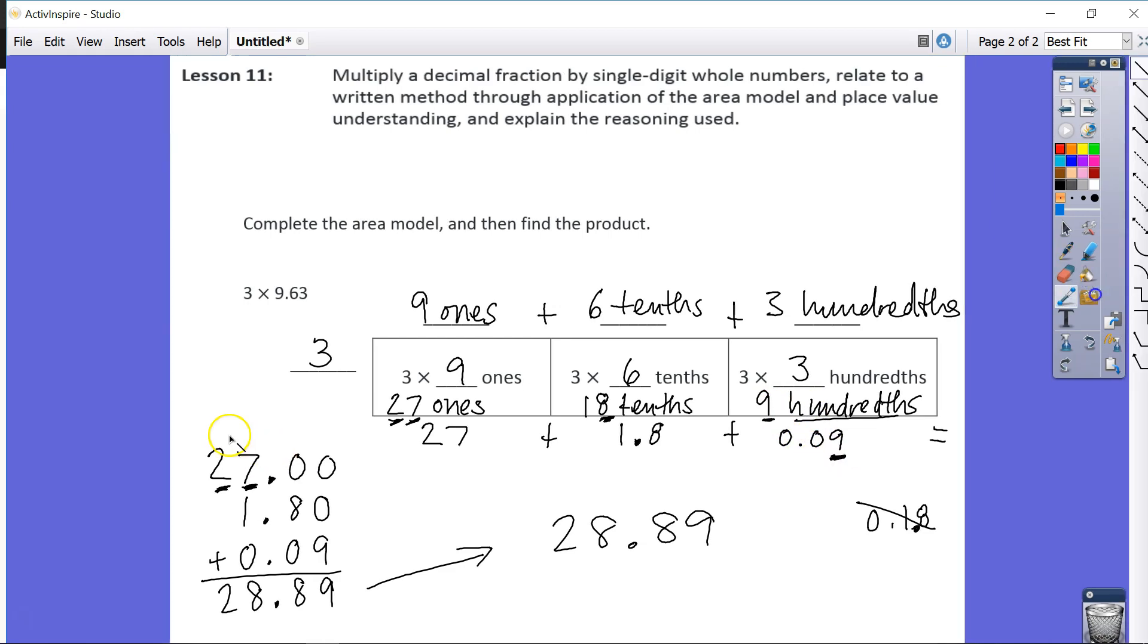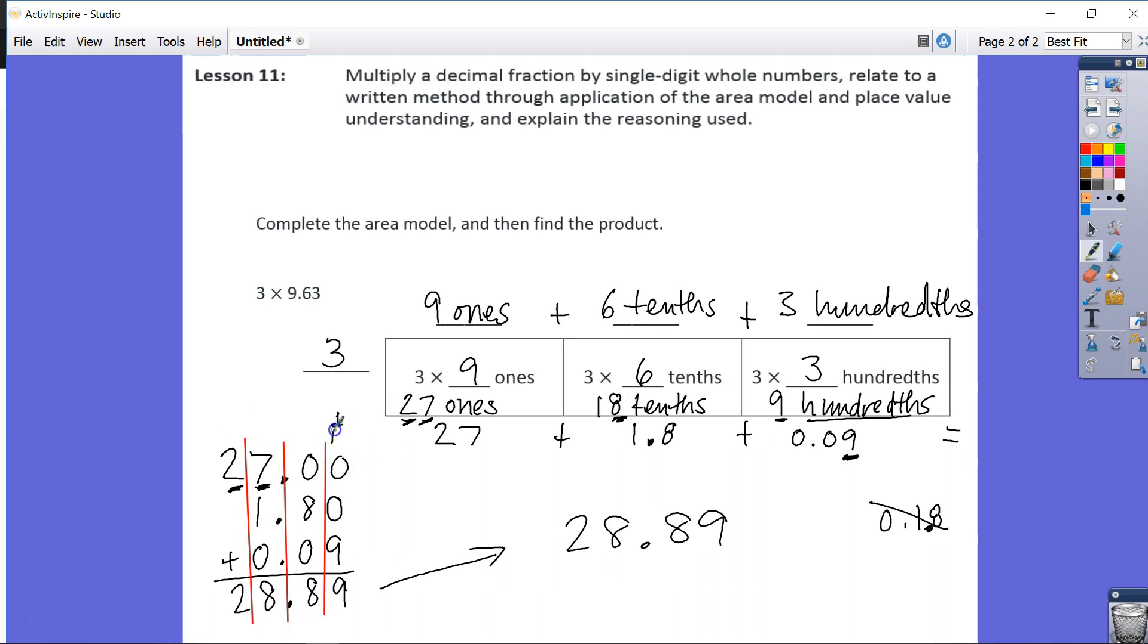If you notice, when I completed this here, my place value units all line up. I have my hundredths, I have my tenths, I have my 1's, I have my 10's. So all my place value units line up, and there's no confusion as to if I'm adding correctly.